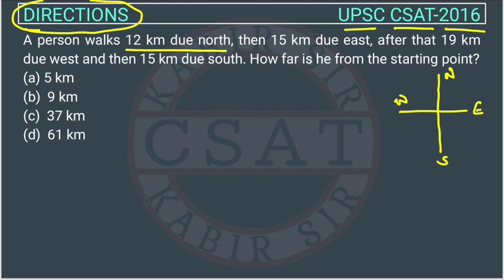The person was here. He is going in the north direction, 12 kilometers. Then 15 km due east — he is moving to the east. How many kilometers? 15.